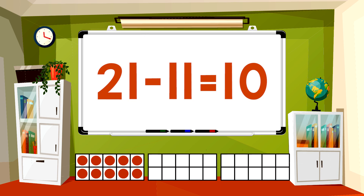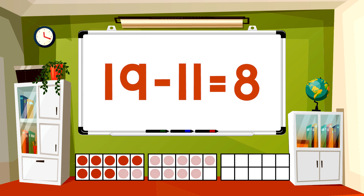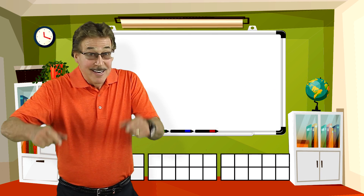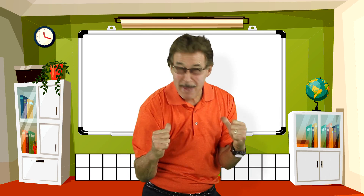21 minus 11 equals 10. 19 minus 11 equals 8. 12 minus 11 equals 1. Now you answer before me.